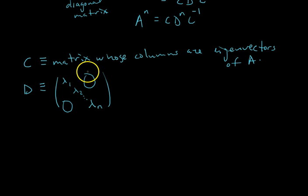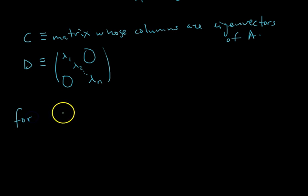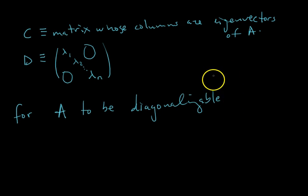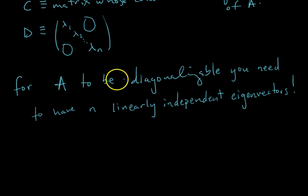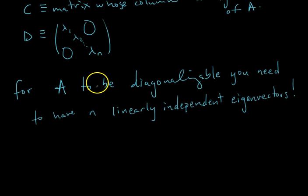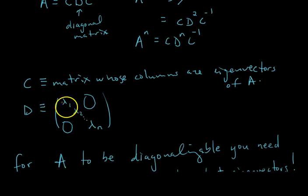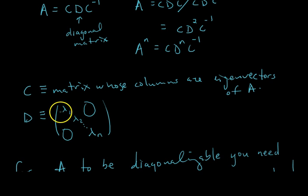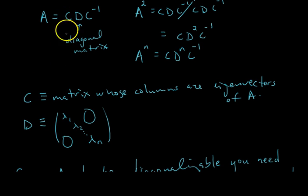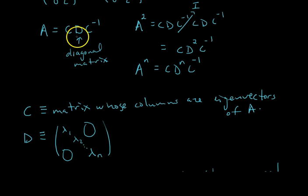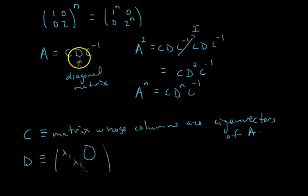For A to be diagonalizable, you need n linearly independent eigenvectors. If you know that, you can construct a suitable C matrix that's invertible, and the D matrix will be diagonal with eigenvalues along the main diagonal. They have to line up: λ₁ must correspond to whichever eigenvector you put as the first column of C, and so on. Following this process, you get C, D, and C⁻¹, diagonalizing A and making it easy to compute A to an arbitrary power.